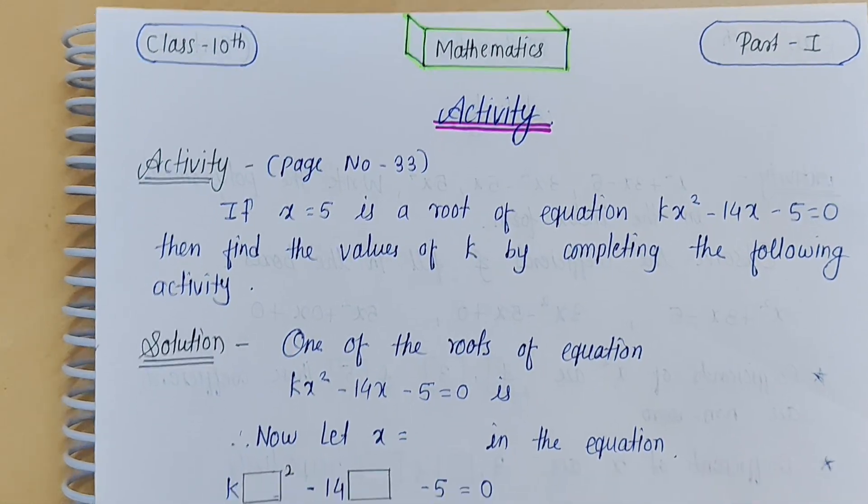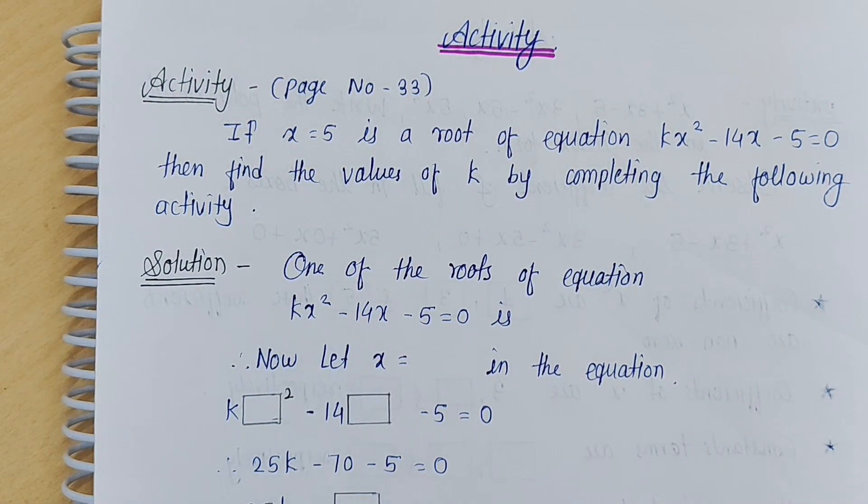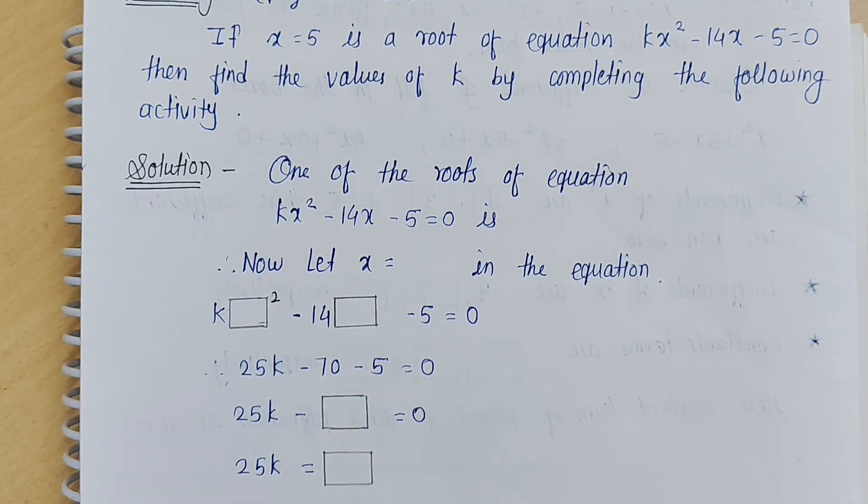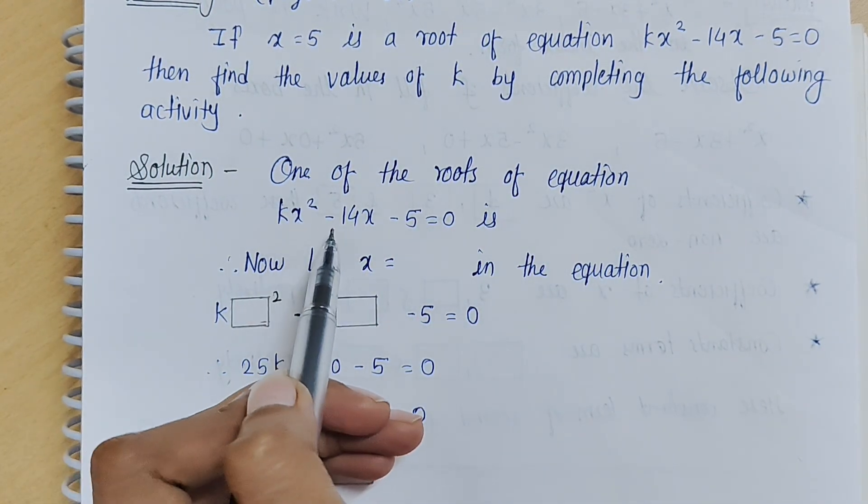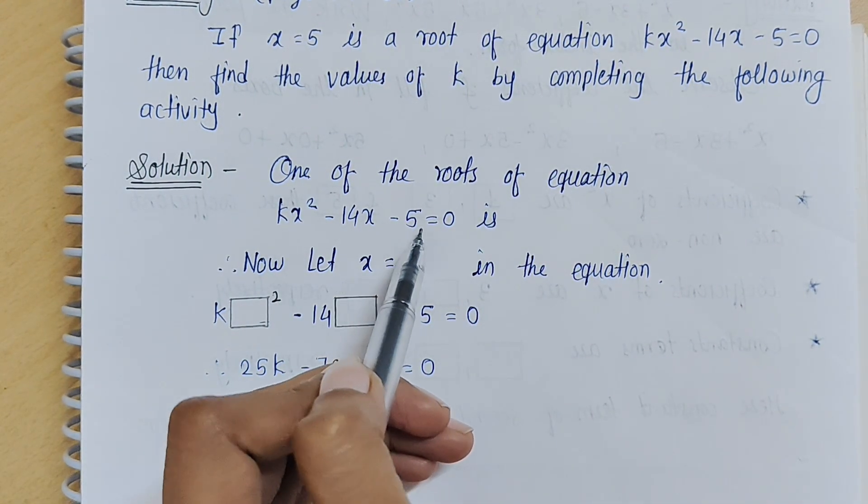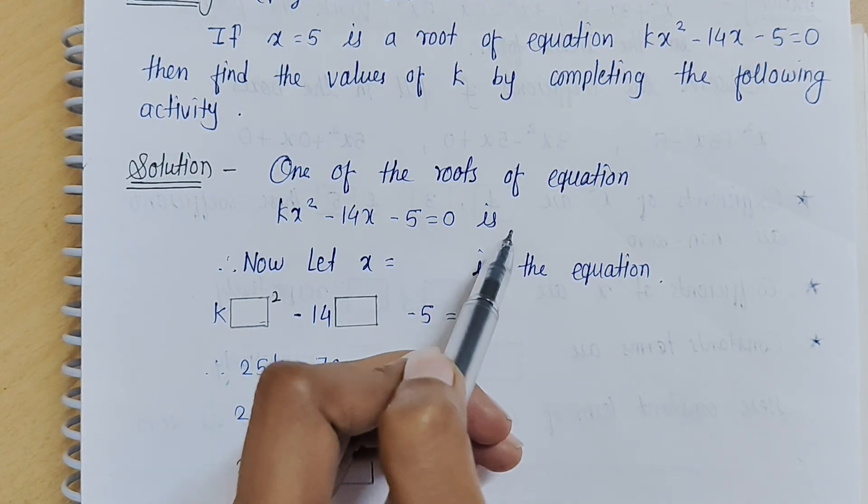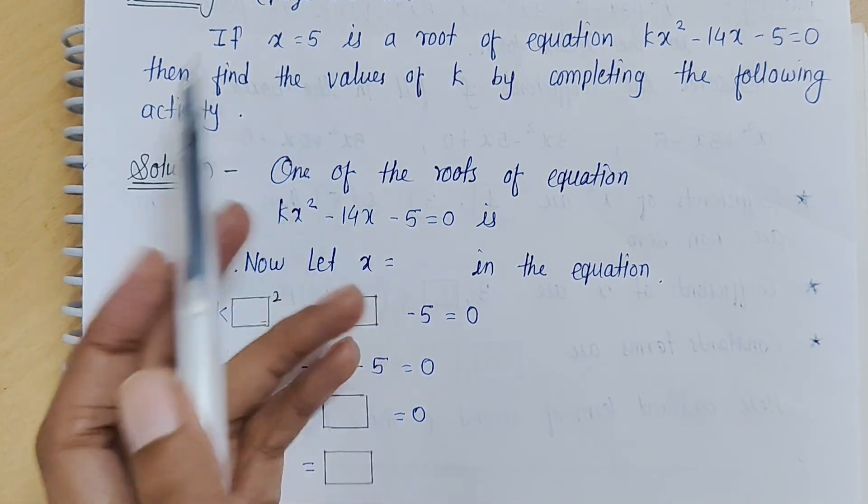The activity provides the solution format. In the solution, there are some terms that we have completed, and we have to fill up the rest. One of the roots of equation kx² minus 14x minus 5 equals 0. First of all, x equals 5, so we can consider that root.